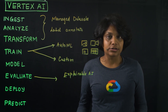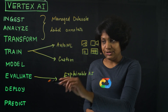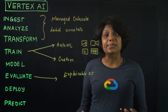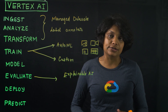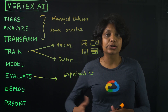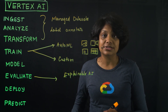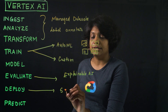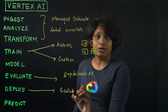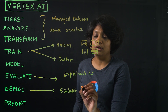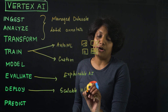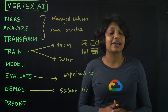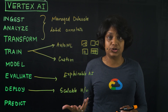Once you're happy with the model, you deploy it to an endpoint to serve it for online predictions using the API or the console. This deployment includes all the physical resources and the scalable hardware needed to scale that model for lower latency and online predictions. You can, of course, also use the undeployed model for batch predictions.